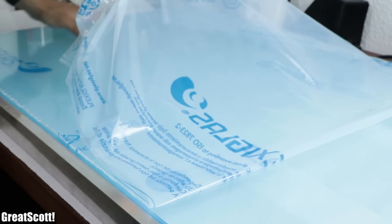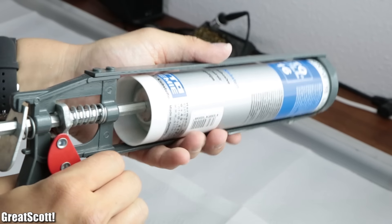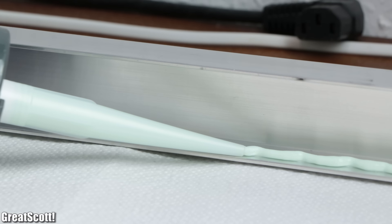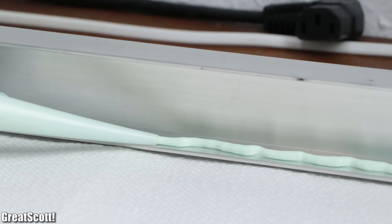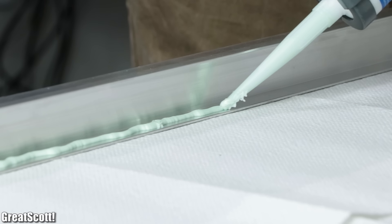After removing its protective film on one side, it was time to utilize the mirror adhesive by adding a thick line of it all around the frame. I made sure to use a lot of the adhesive since the seal has to be waterproof later on.